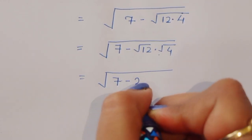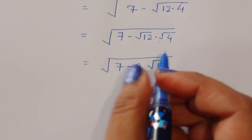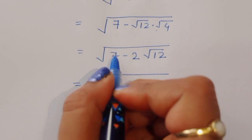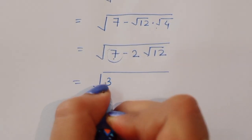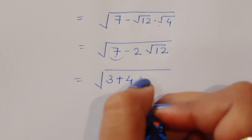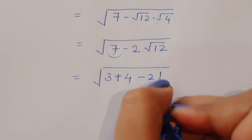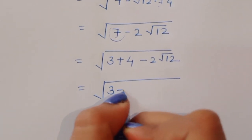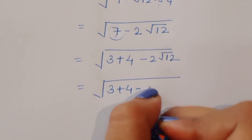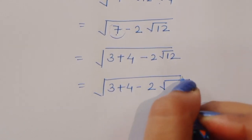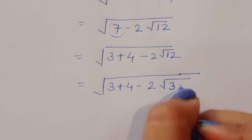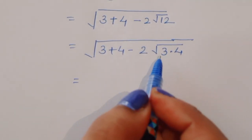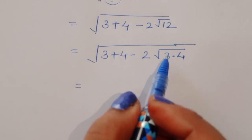7 minus 2 square root of 12 is equal to — now this 7 we can write as 3 plus 4. So we have 3 plus 4 minus 2 square root of 12. Now square root of 12 we can write as square root of 3 times 4, so 3 times 4 equals 12. So we have 3 plus 4 minus 2 square root of 3 times 4.